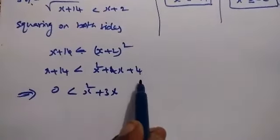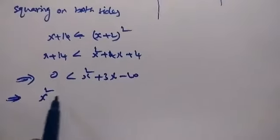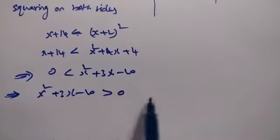Simplifying: 3x plus 4 minus 14 gives minus 10. So x squared plus 3x minus 10 greater than 0.